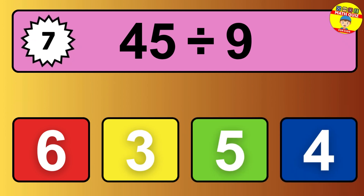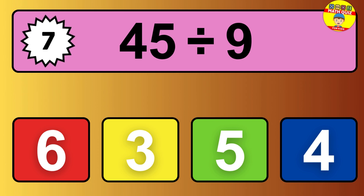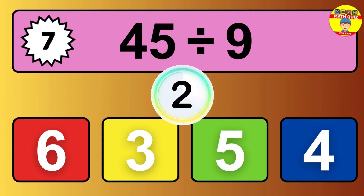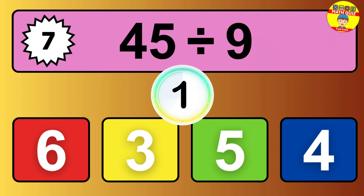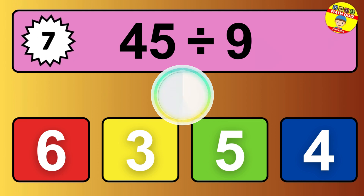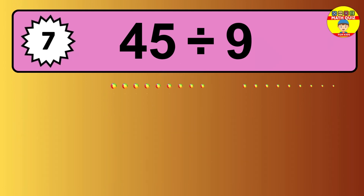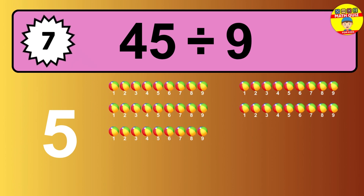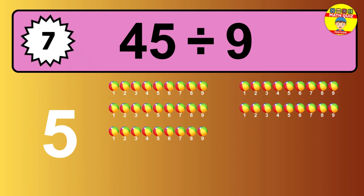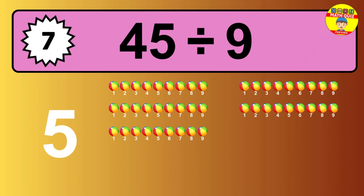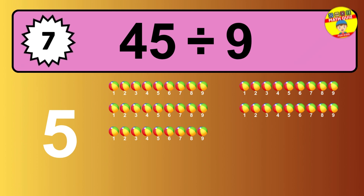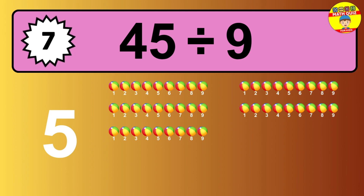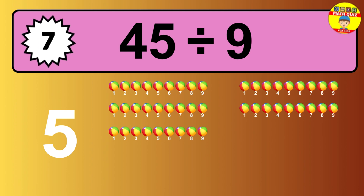45 divided by 9 — time to think. Let's go to the solution. Divide the number 45 by 9. Each group contains 9 units, so dividing 45 by 9 results in 5 equal groups. Thus, the result is 45 divided by 9 equals 5.